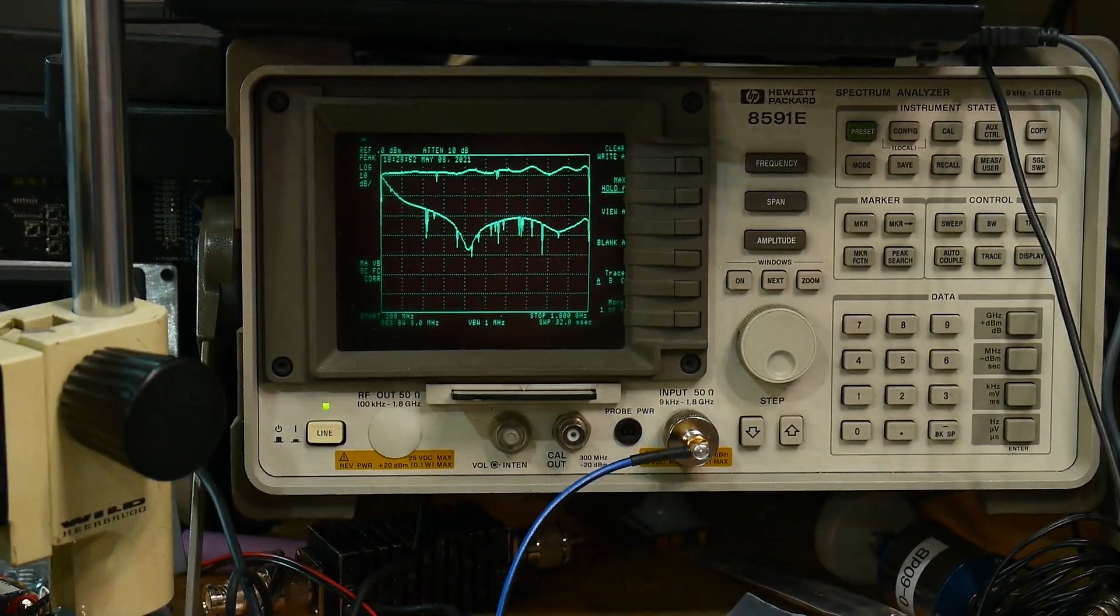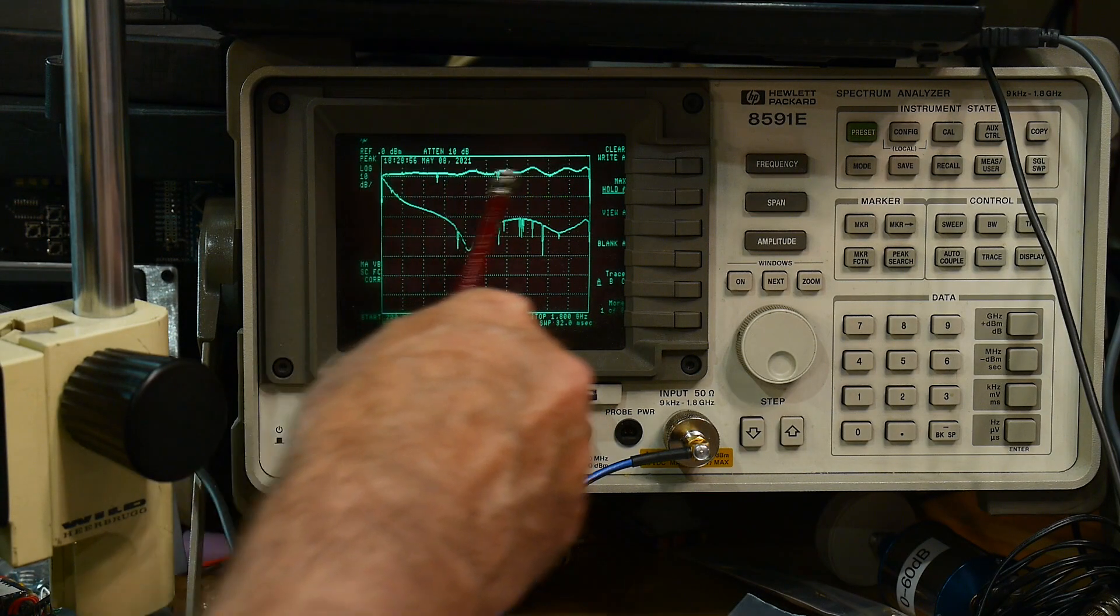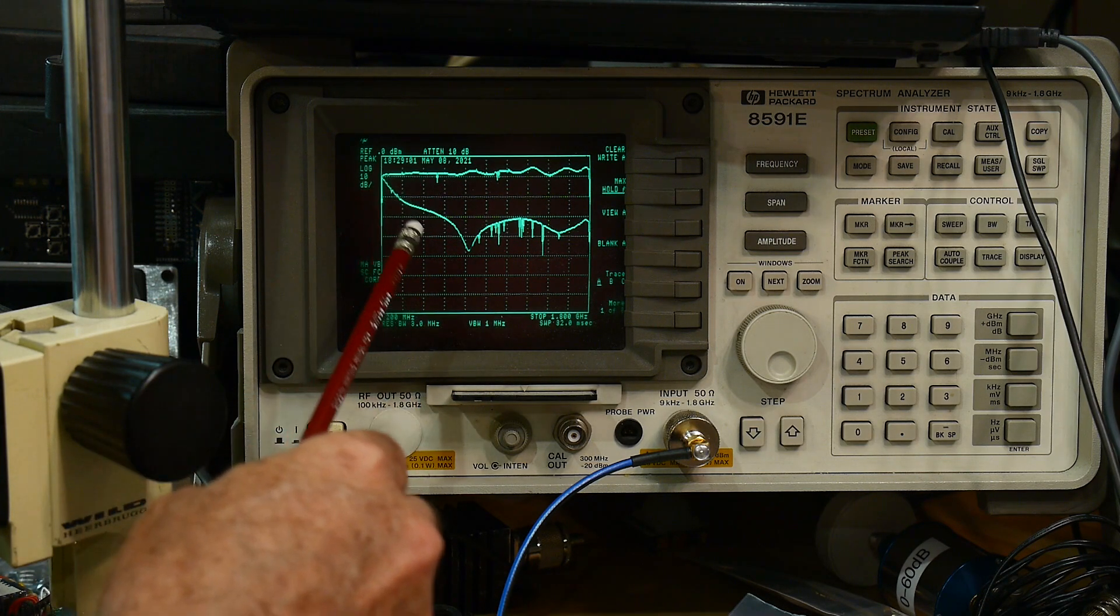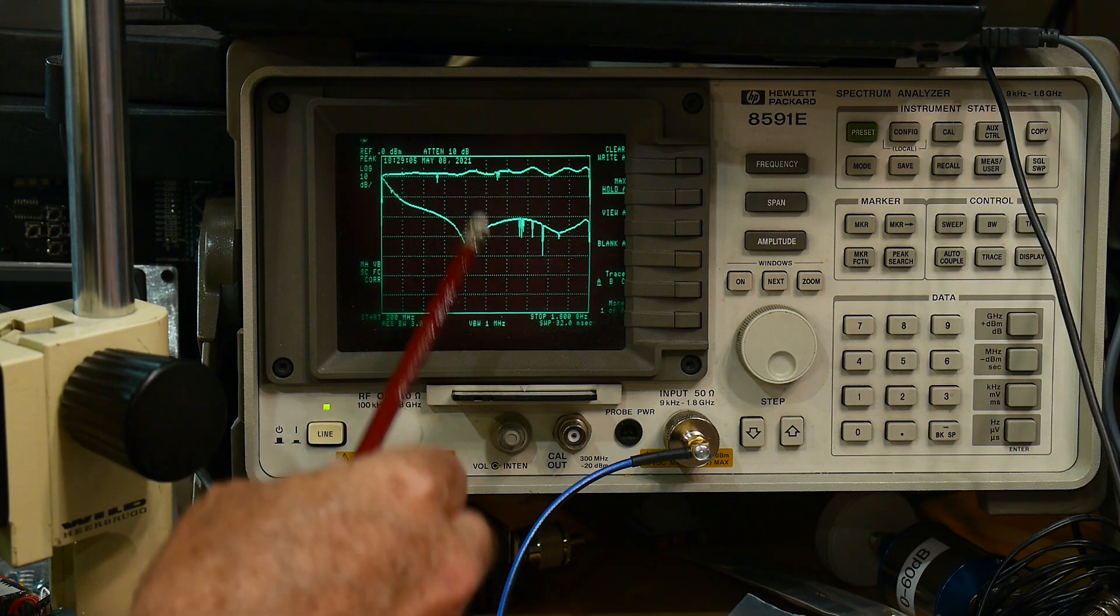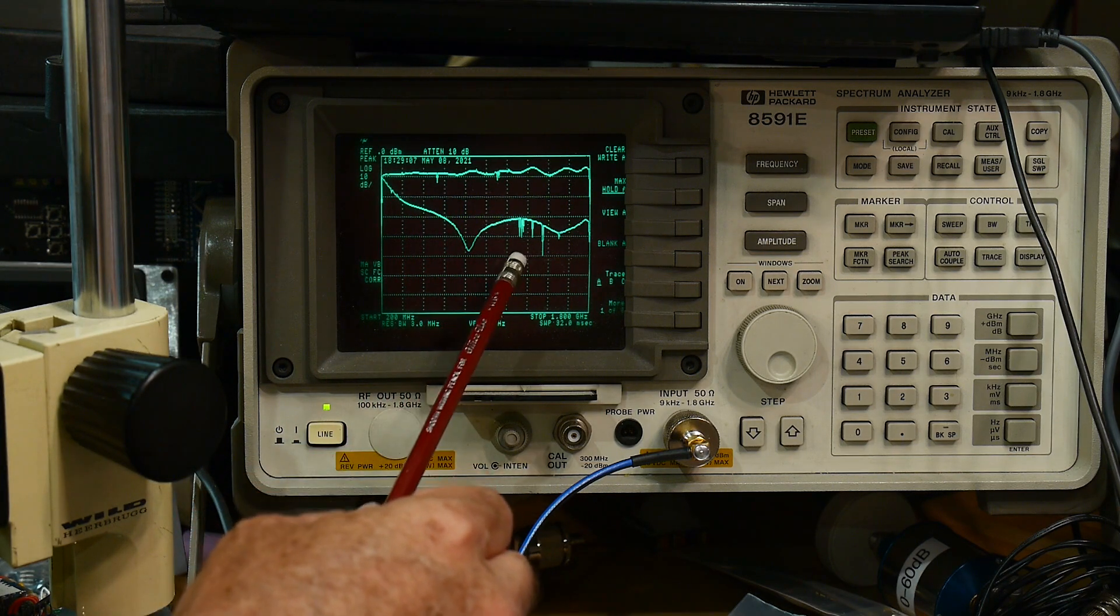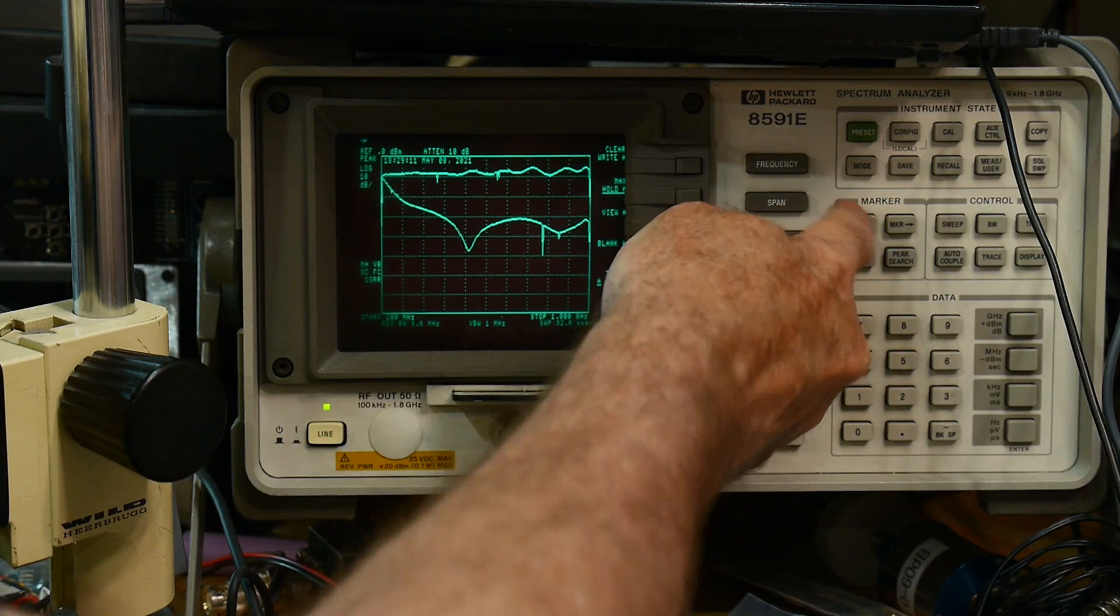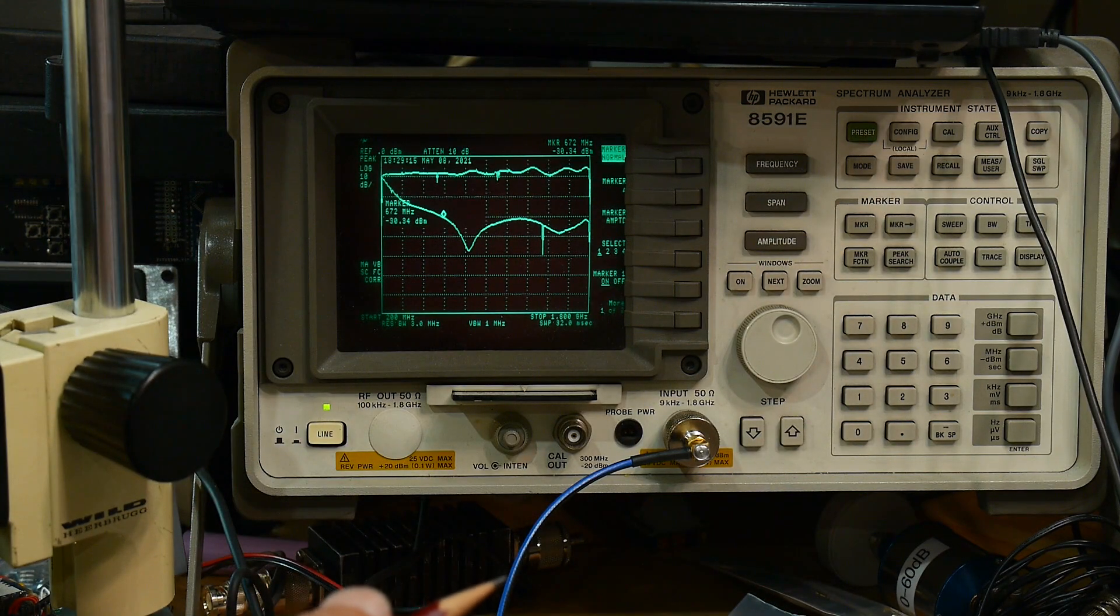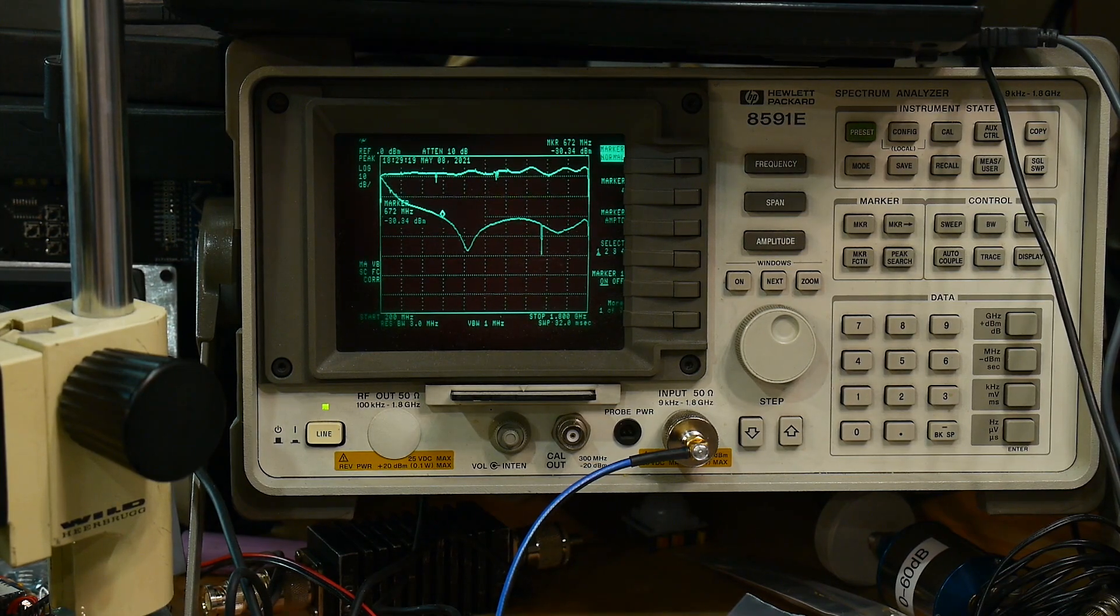And we can see here we have the old trace up at the top, that's the input to output. And then this is from port one to port three. And for port one to port three does have some isolation, it has about 20 dB of isolation but only above 600 megahertz.